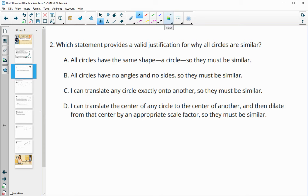All right, number two, which statement proves a valid justification for why all triangles are, or sorry, why all circles are similar? Okay, so why are all circles similar? So A says all circles have the same shape, a circle, so they must be similar. I mean, it's close, but not quite. That doesn't use our definition of similar, okay, because that's kind of like saying all triangles are the same shape, so then they have to be similar. We need a little bit more substance to that. B says all circles have no angles and no sides, so they must be similar. No.